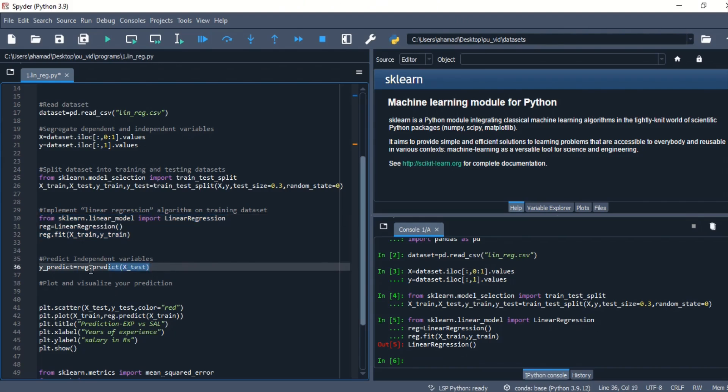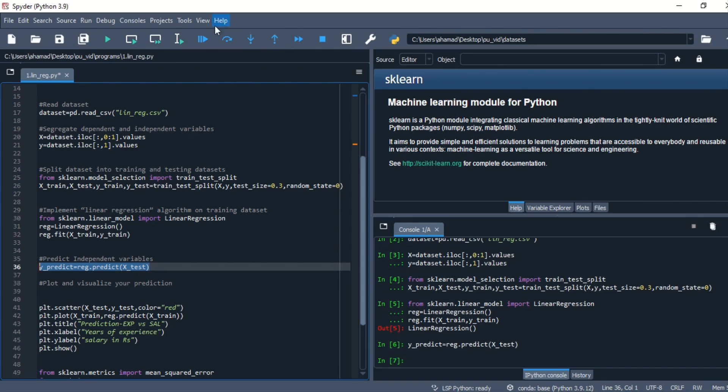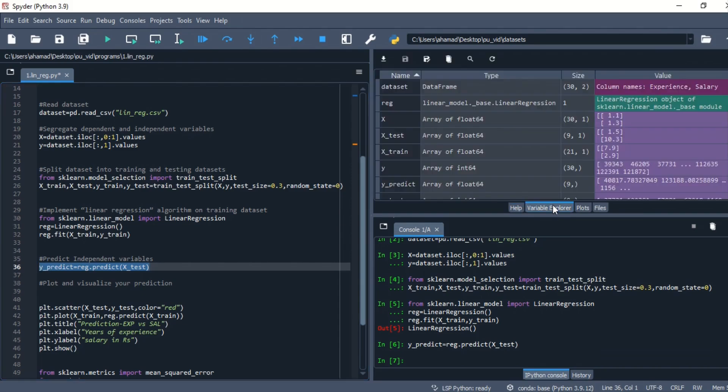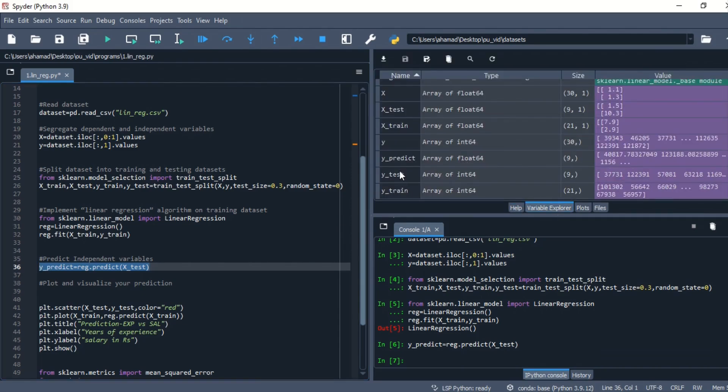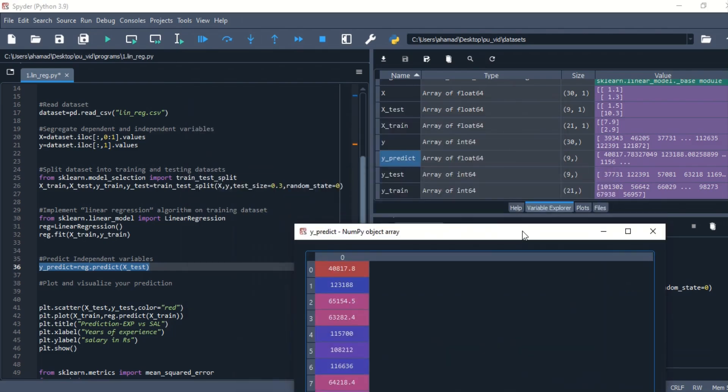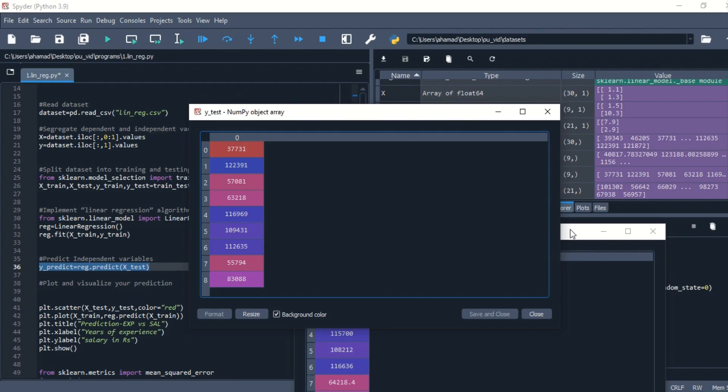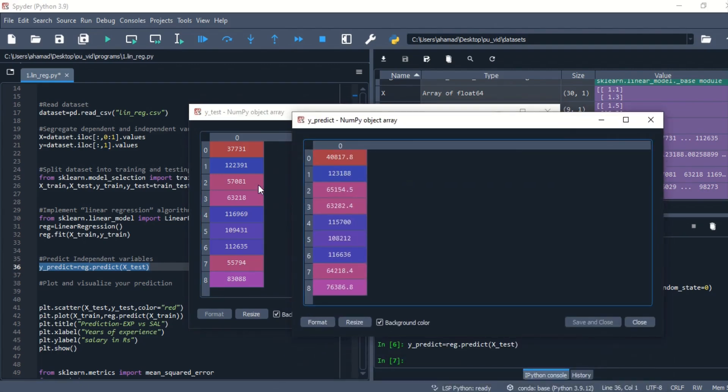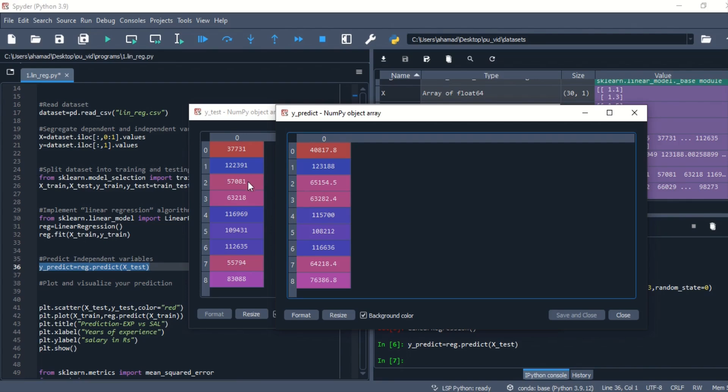After that, I am predicting the testing dataset on the basis of the independent variables of the testing dataset and storing that into y_predict object. See, I have executed it successfully. Okay, let's explore what is there in y_predict and also y_test. y_test is nothing but the actual data values of the testing dataset and y_predict is our predicted dataset. You can see both are almost same.